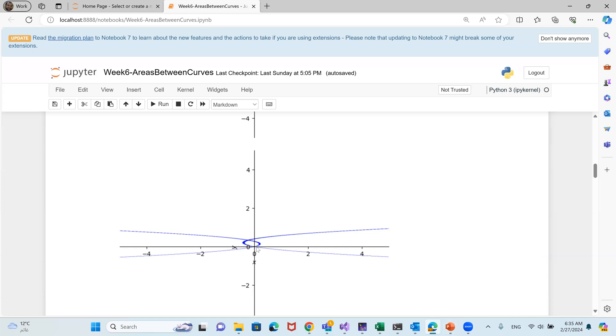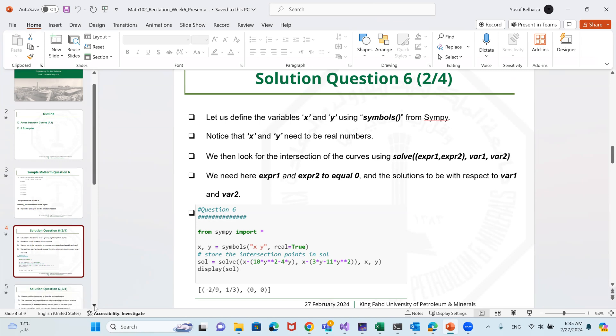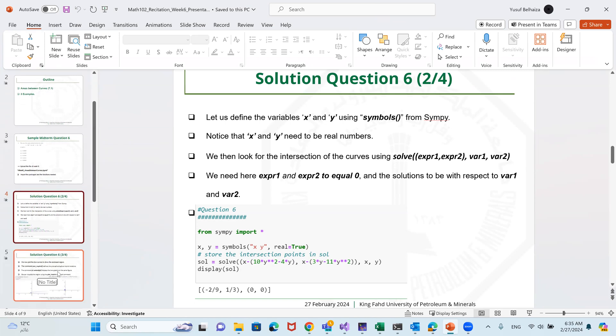Here are the two points of intersection, of course. The point of origin 0, 0, and the point which was, I think, minus 2 over 9, 1 over 3. That's slide number four. We'll move to slide number five.